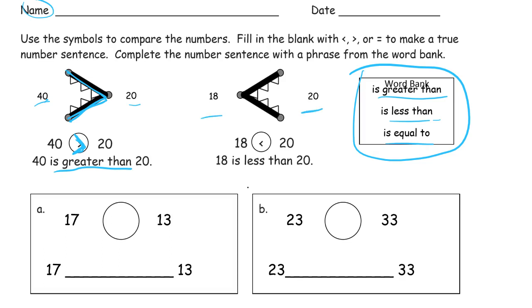Here's another example with 17 and 13. Alligator eats the bigger number so that's the 17. So 17 is greater than 13. Maybe you can't fit all of the words on the line. You just kind of squeeze them in there. That's okay.